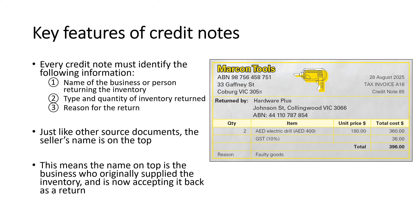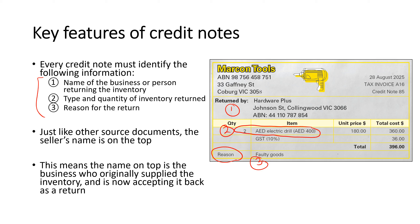Key features of credit notes: a credit note looks really similar to an invoice. It must identify three things. First, the name of the business or person returning the inventory — in this case, Hardware Plus. Second, what type of inventory was returned and the quantity — here, two AED electric drills. Third, the reason for the return — in this case, the drills were faulty.